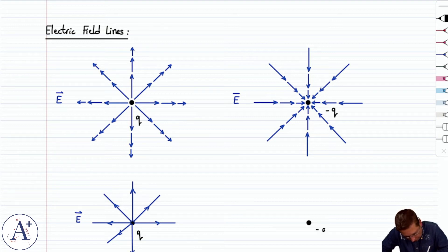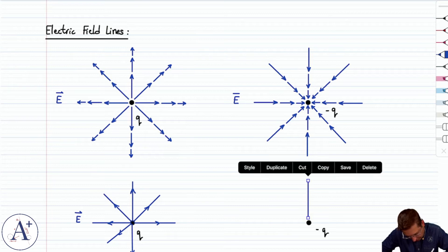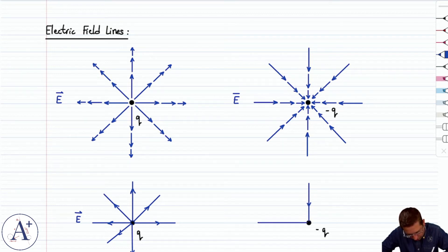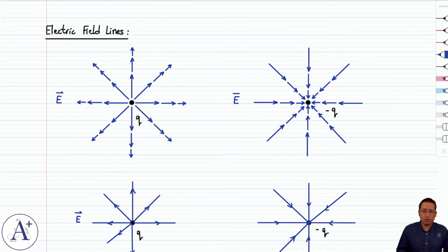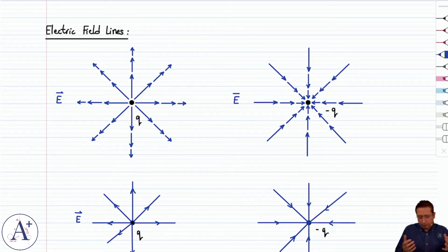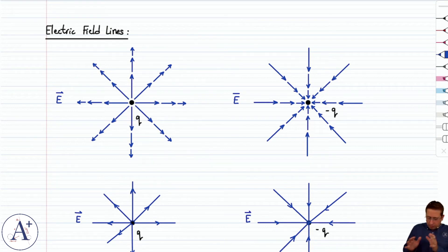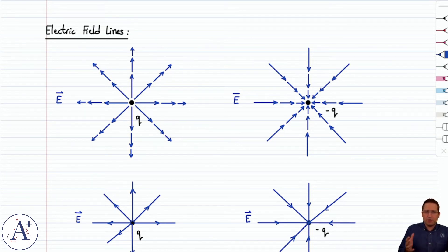The same applies to the negative point charge — we just have an electric field directed toward the point charge, and field lines pointing inward represent the electric field everywhere in the space surrounding it. You could draw as many field lines as you want; sometimes just one if that's the one you want to focus on. This approach applies not just to point charges but eventually to different charge distributions such as an infinite line of charge or an infinite sheet of charge. So it's very useful to have electric field lines.